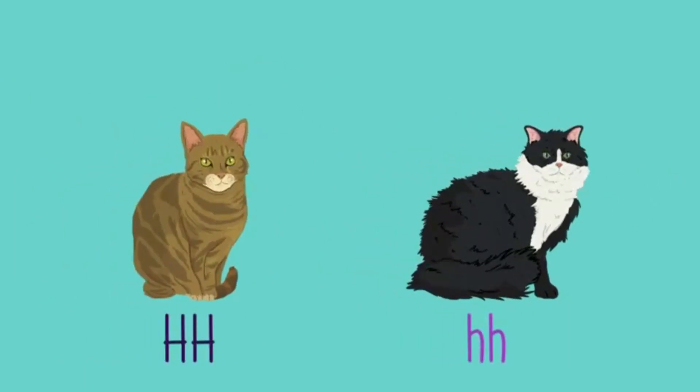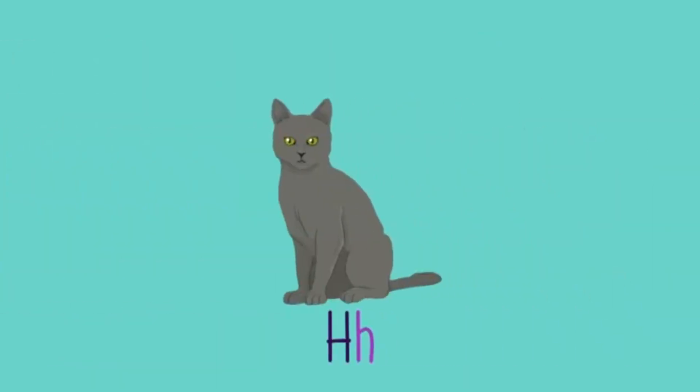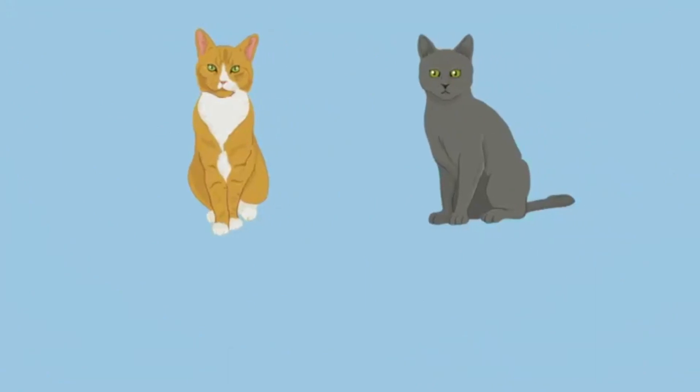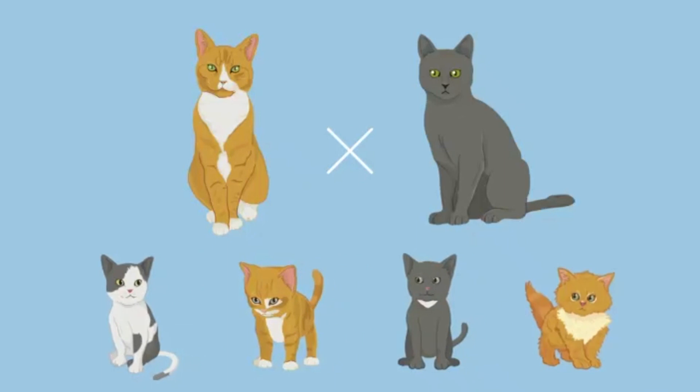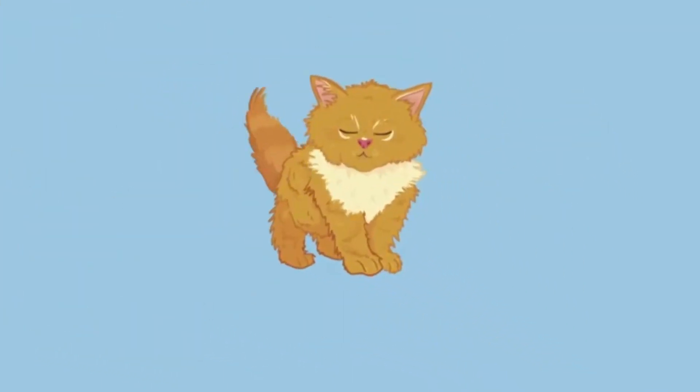When both of the alleles for a characteristic are the same, the individual is homozygous. When the two alleles are different, the individual is heterozygous. If two short-haired cats breed, you might expect short-haired offspring. But sometimes, long-haired kittens appear. So how does this happen?